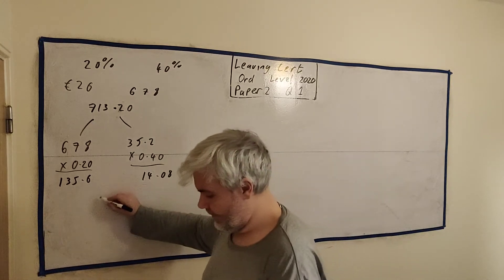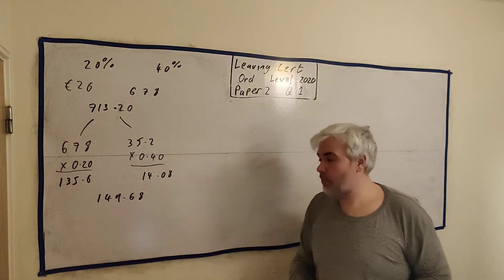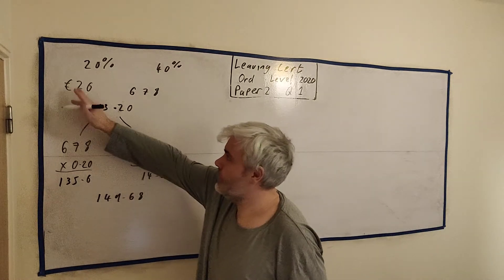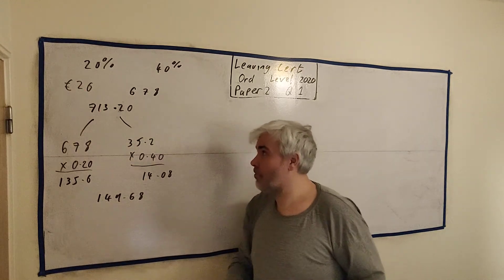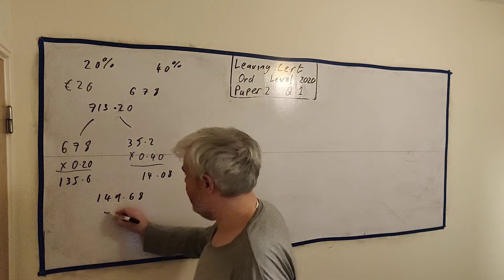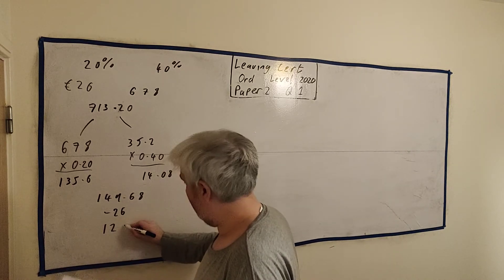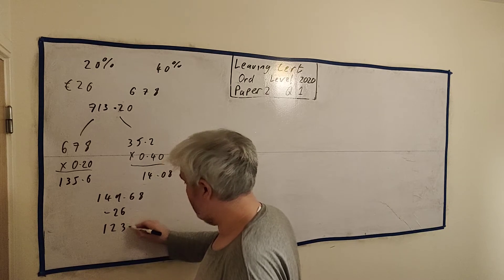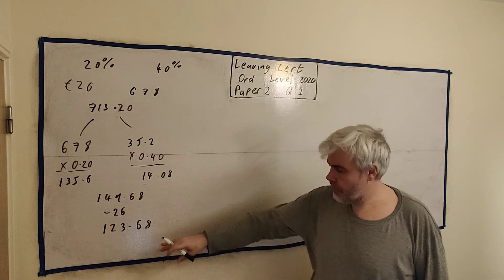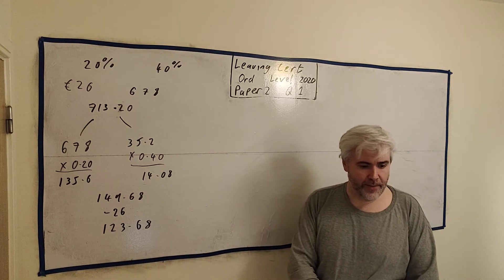So the total, let's add these together, we get €149.68. That's how much tax he now owes. But remember, this €26 of tax credit, somebody else pays that for him, so he doesn't have to pay all this. We can go ahead and take €26 away from it, which leaves him with a bill of €123.68. Lots of students stopped right here on questions like this, but they didn't ask about how much tax he paid.